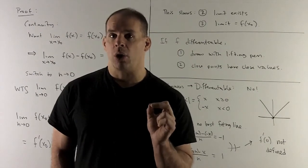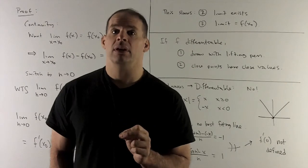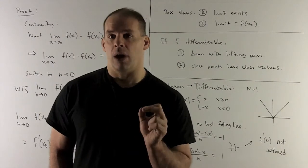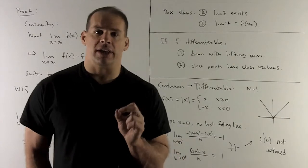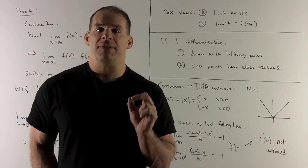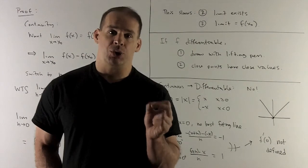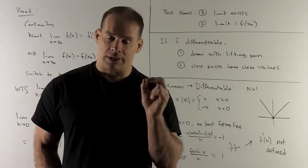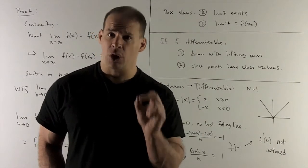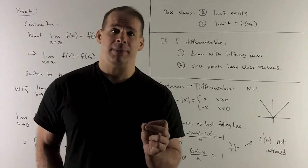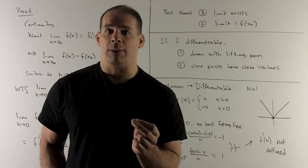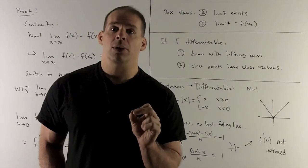One thing we might hope for: if I have continuity, does that mean I always have differentiability? Does continuous always mean I have a tangent line? Well, no. What can go wrong? Let's look at the graph of |x|. If I look at what's happening at x = 0 and try to fit a tangent line, there are actually two best-fitting lines: y = x and y = −x. If they can't agree from both sides, there's no best-fitting line, so f-prime at 0 is undefined.